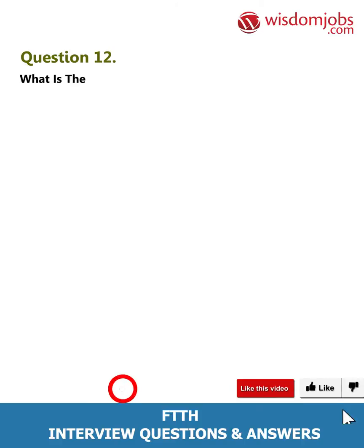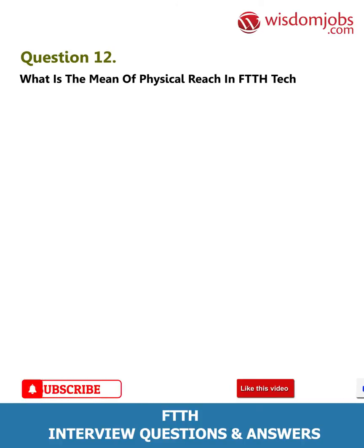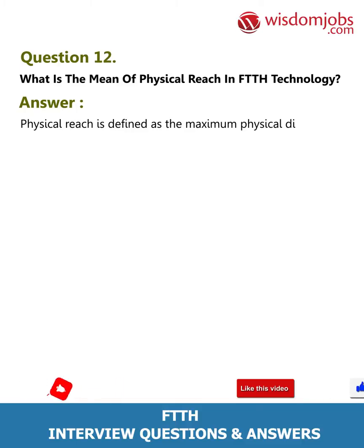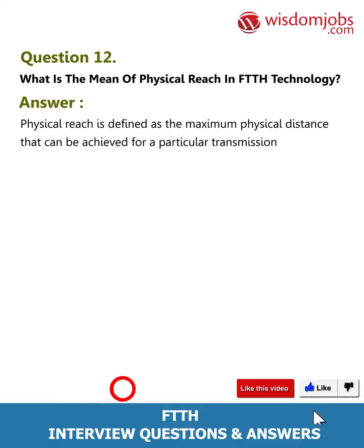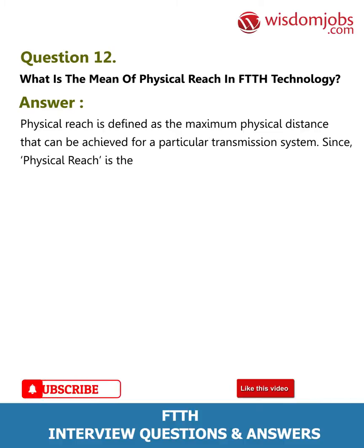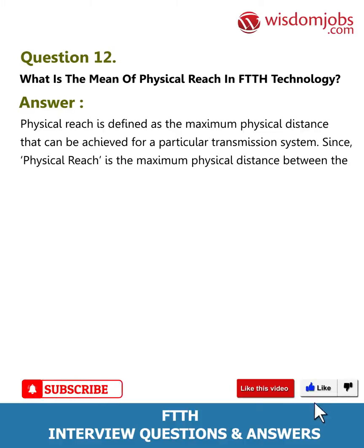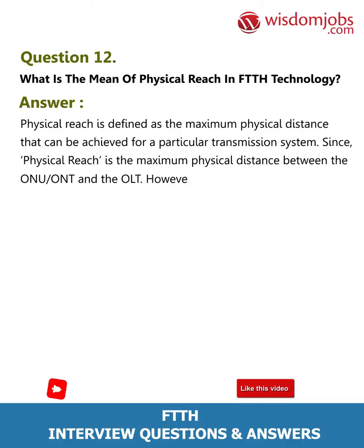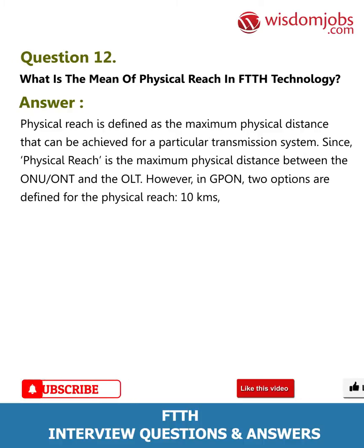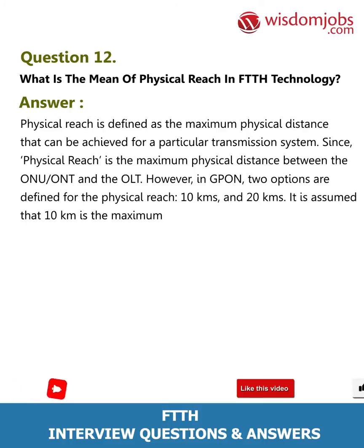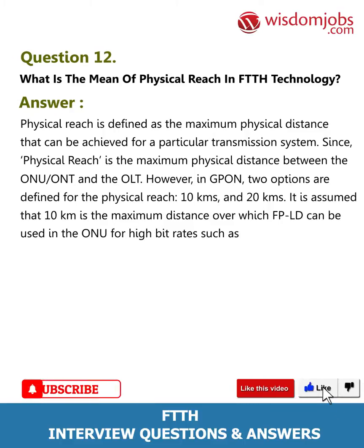Question 12: What is the meaning of physical reach in FTTH technology? Answer: Physical reach is defined as the maximum physical distance that can be achieved for a particular transmission system. In GPON, two options are defined for the physical reach: 10 km and 20 km. It is assumed that 10 km is the maximum distance over which FPLD can be used in the ONU for high bit rates such as 1.25 Gbps or above.